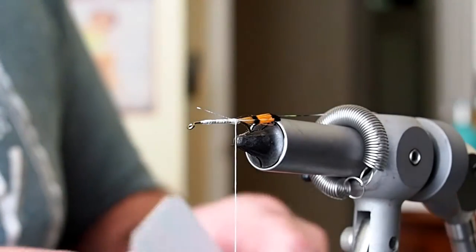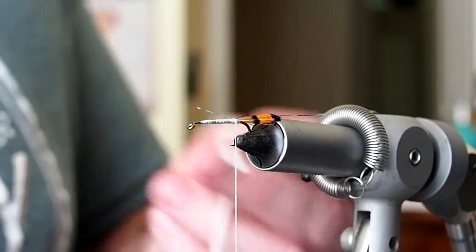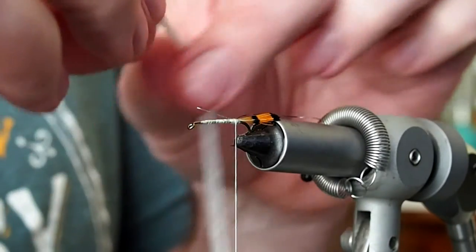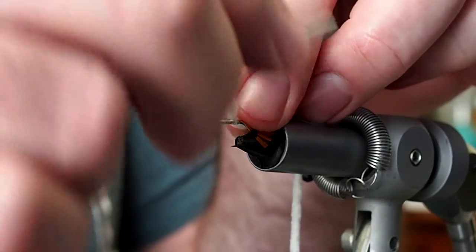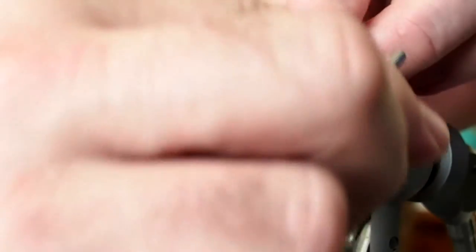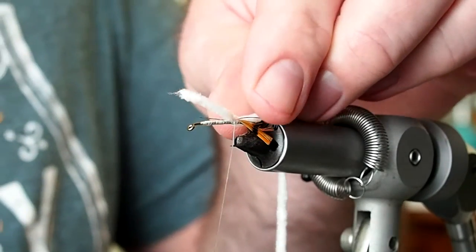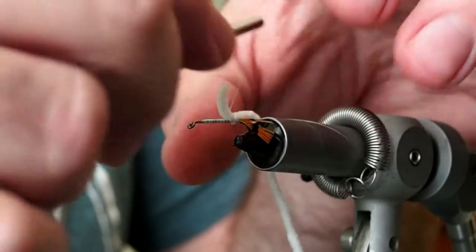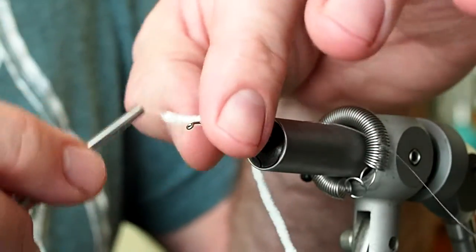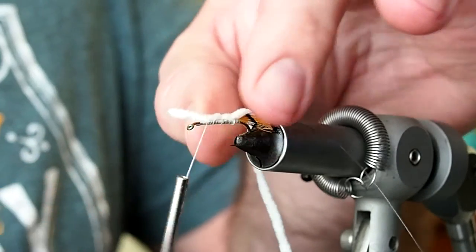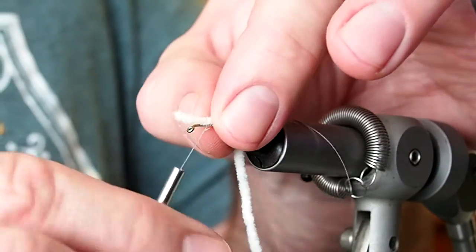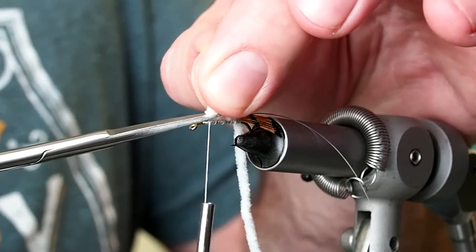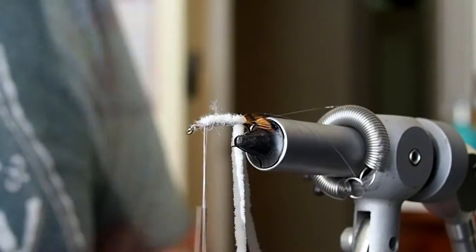For the body I'm going to be using a white fine chenille, very small diameter chenille. I'm going to tie that on at the rear of the fly, and then just advance our thread forward and trim off the excess there.